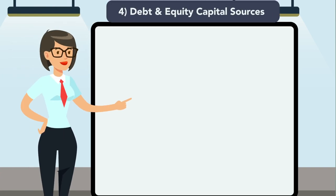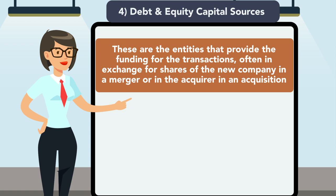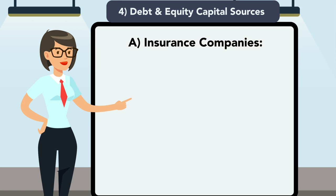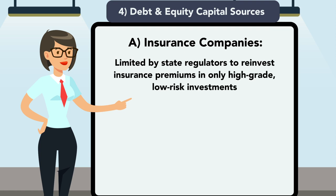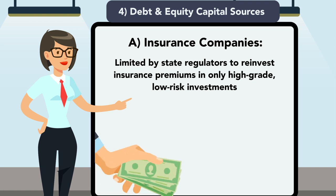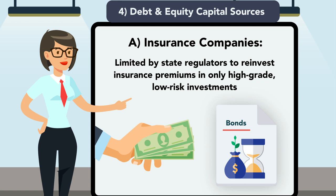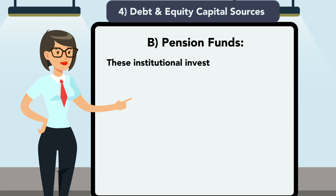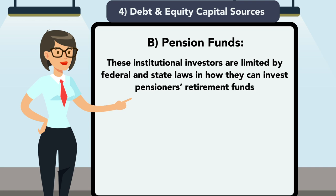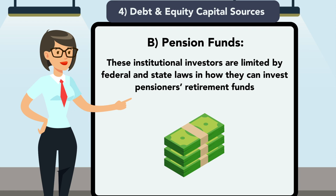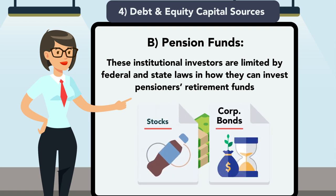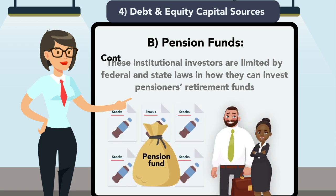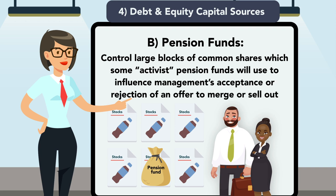Four: debt and equity capital sources. These are the entities that provide the funding for the transactions, often in exchange for shares of the new company in a merger or in the acquirer in an acquisition. They may include: A) insurance companies, which are limited by state regulators to reinvest insurance premiums in only high-grade, low-risk investments — typically purchasing debts such as bonds issued as part of the financing structure of a transaction; B) pension funds, which are limited by federal and state laws in how they can invest pensioners' retirement funds. Most of these funds invest in common stock offerings issued by the newly formed merged firms or in their corporate bonds. Pension funds also hold influence over corporate managers because these funds control large blocks of common shares, which some activist pension funds will use to influence management's acceptance or rejection of an offer to merge or sell out.